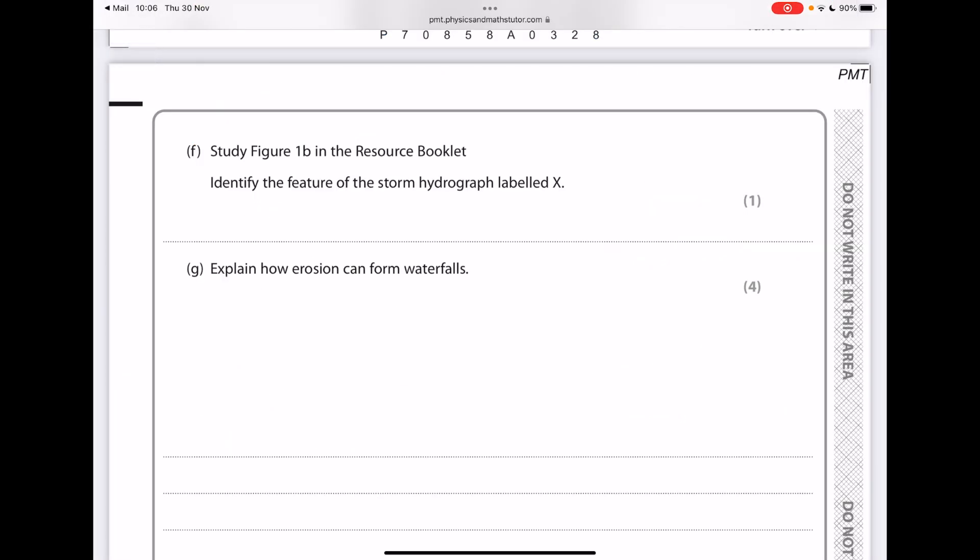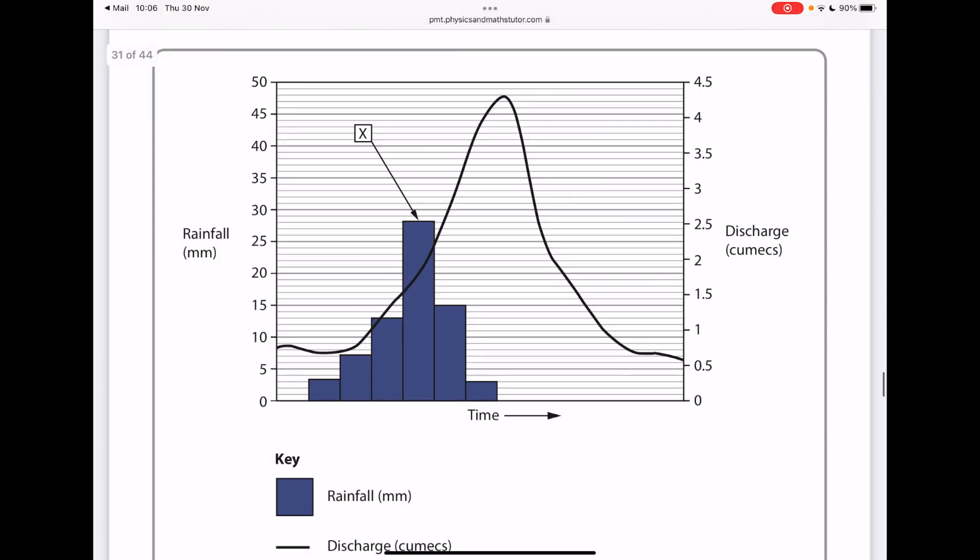So let's look at some past paper questions. We're being asked to study figure 1b and identify the feature of the storm hydrograph labeled X. So here's figure 1b. What is X? I'm hoping you can see that that is the peak rainfall. It's the top of the bar chart.